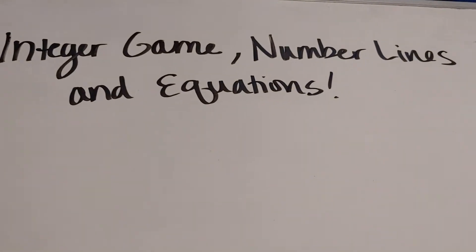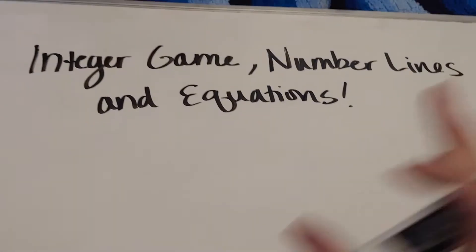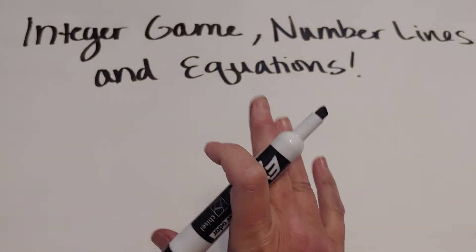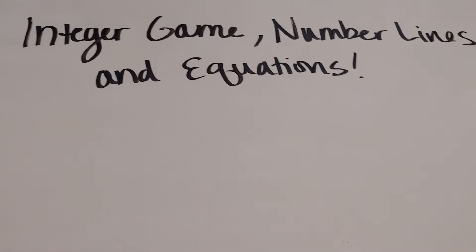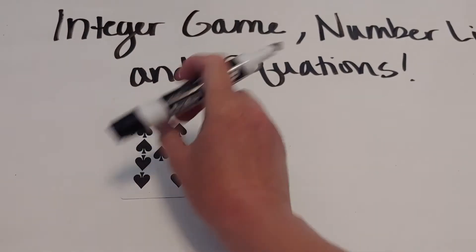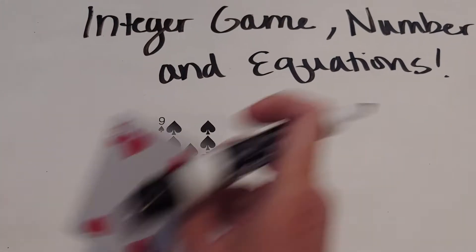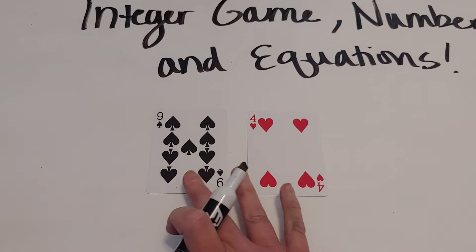Now we're going to use the integer game with number lines and equations. In the integer game, we're really just using cards. The idea here is that in the Common Core book, students will be given two cards and will illustrate them.